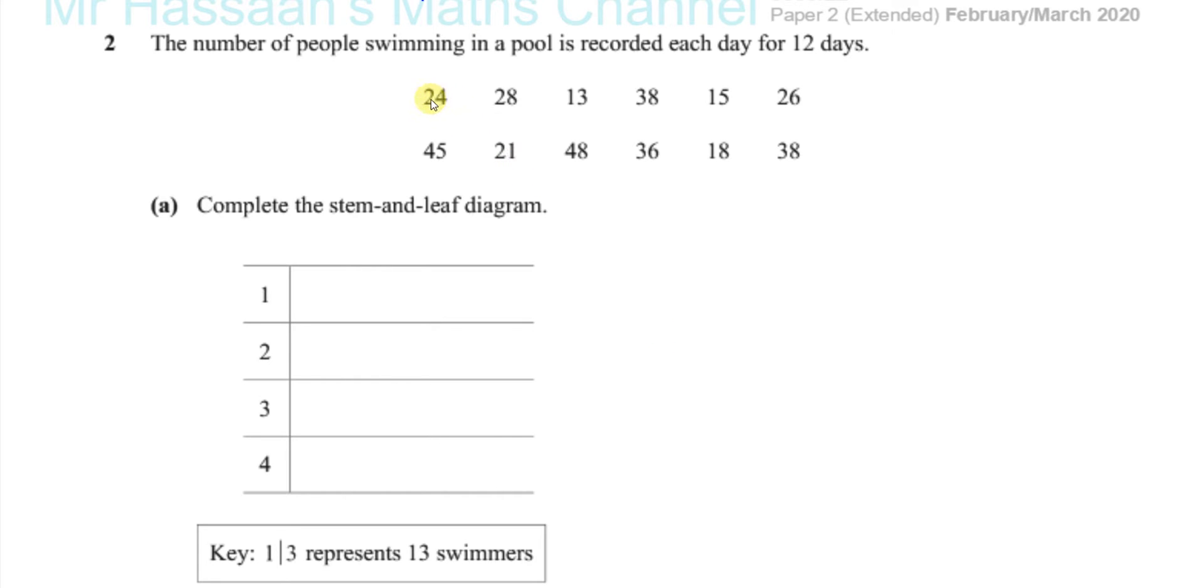We've got 24, so I'm going to write a 4 here. Put a comma after it. 28, so I'm going to put an 8 here. They both belong in the 20s. 13 belongs in the tens, so that's going to be a 3 here. Then you've got 38. Let's just cross these off as we're doing them. 38, that's going to be over there. 15 is going to be in the tens. Cross it off. 26 is going to be in the 20s. Cross it off. 45 in the 40s.